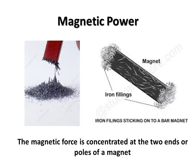You can try this: place some iron filings on a sheet of paper and pass a bar magnet over them. Pick up the bar magnet by holding it in the center. What do you see? The iron filings stick to both ends of the magnet but not in the middle region. Hence, we can see the second characteristic — the magnetic force is concentrated at the two ends or poles of a magnet.